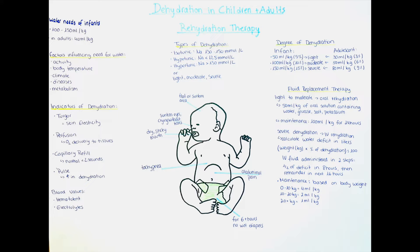Also in severe dehydration of infants, the fontanelles of the skull can appear sunken. In dehydration, the pulse generally increases to compensate for the lost blood volume. The blood pressure may drop, urine diuresis can decrease, and the consciousness of the child might vary from excited and restless all the way to somnolent or even in a comatose state in severe cases.